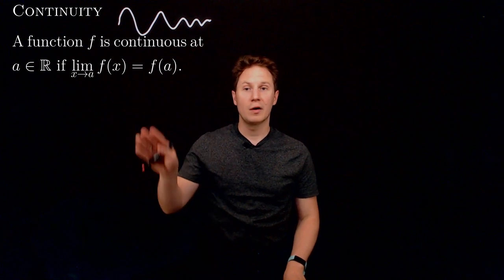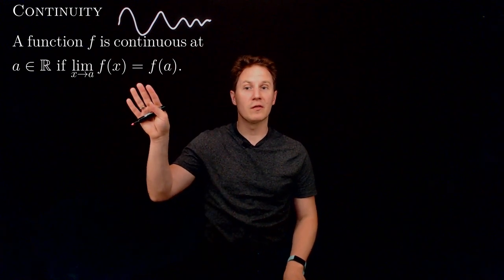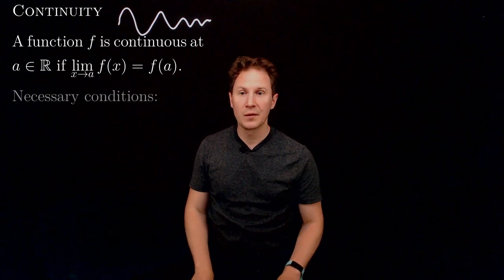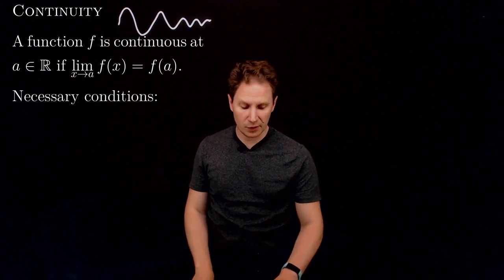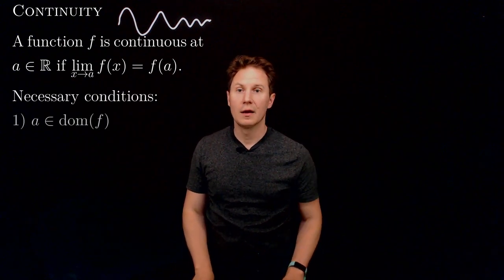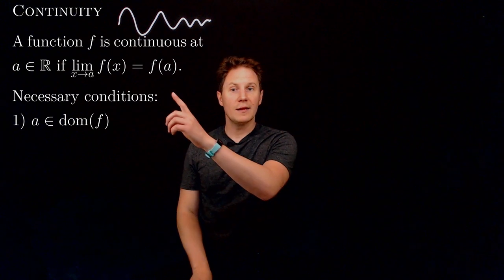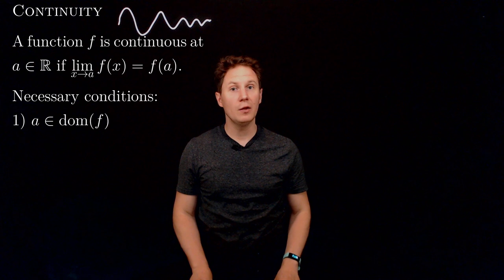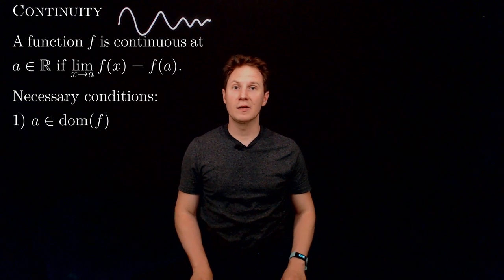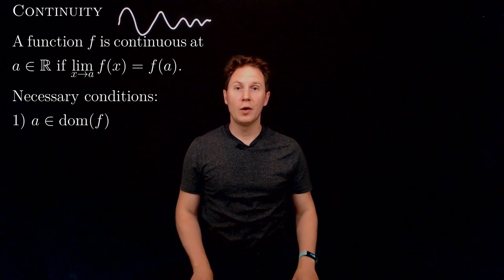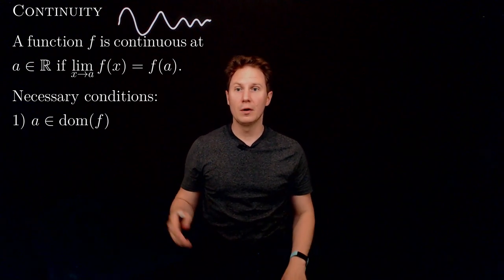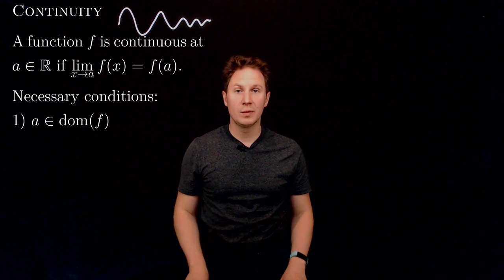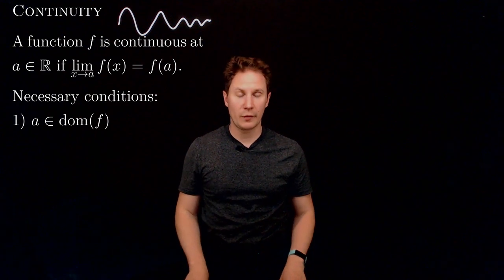Notice how there are implicitly some important conditions baked into this definition. The necessary conditions are: the right-hand side in that relation needs to be defined, so when you evaluate the function at x equals a you have to get a sensible finite number — in other words, a needs to be in the domain of our function f.